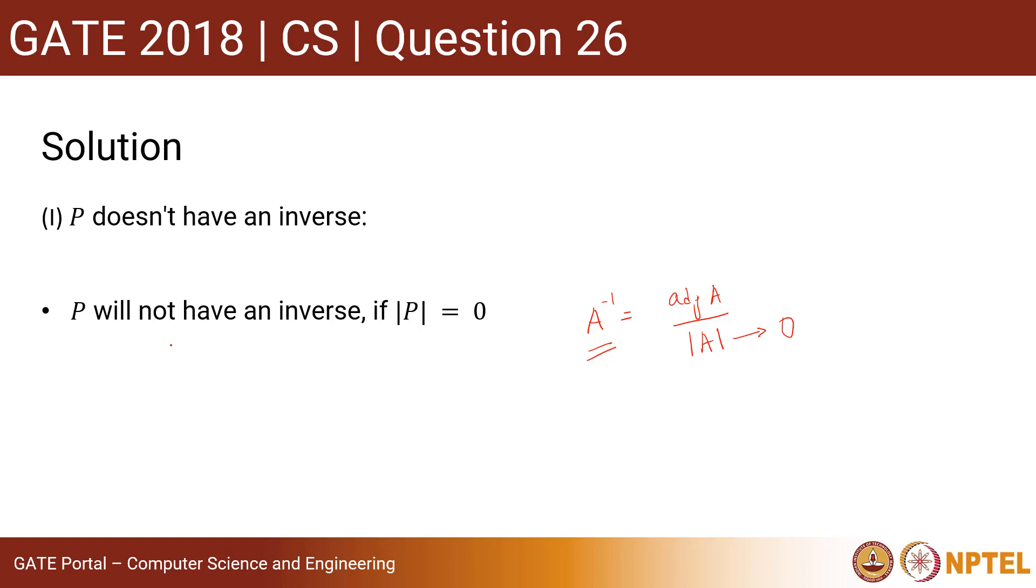If the determinant of P is 0, then P will not have an inverse. This will happen only if one of the eigenvalues is 0. We know that determinant of matrix is equal to product of their eigenvalues.